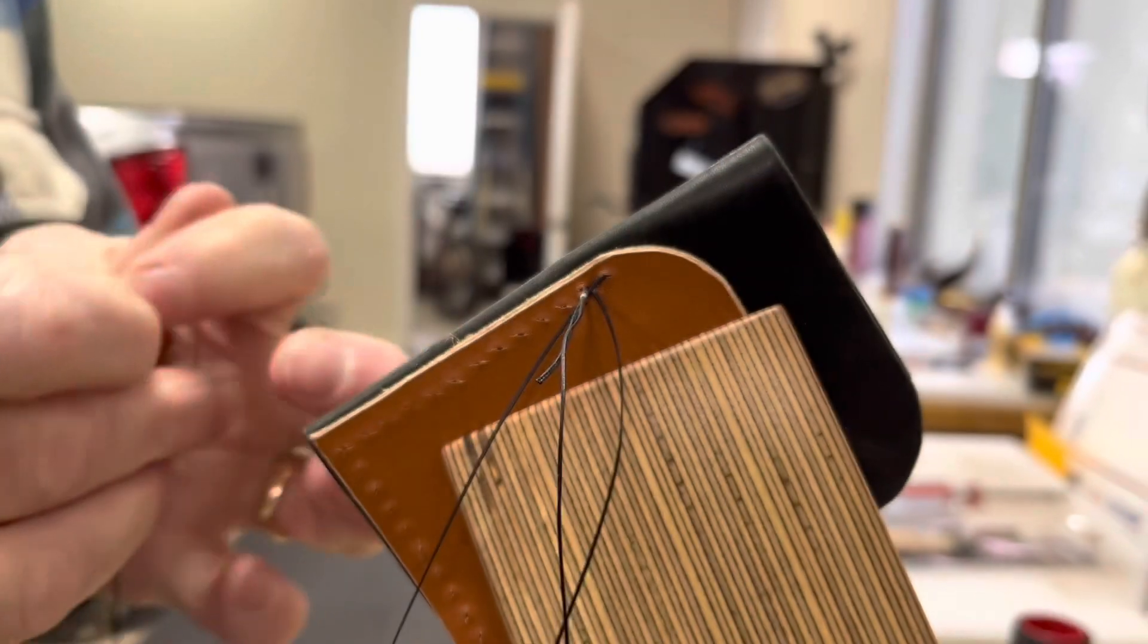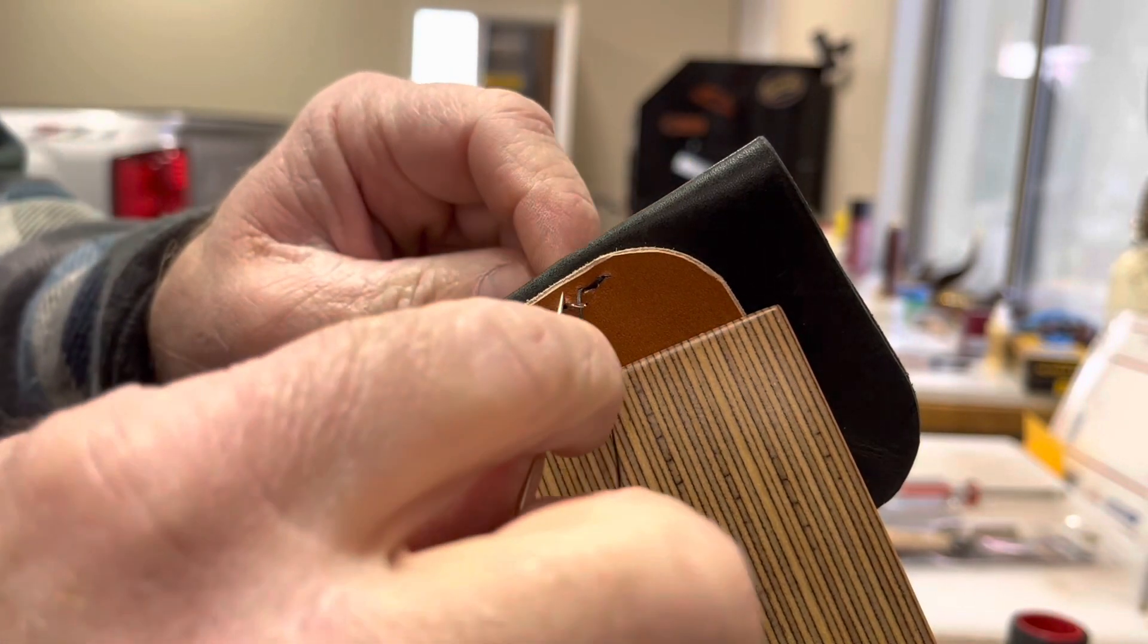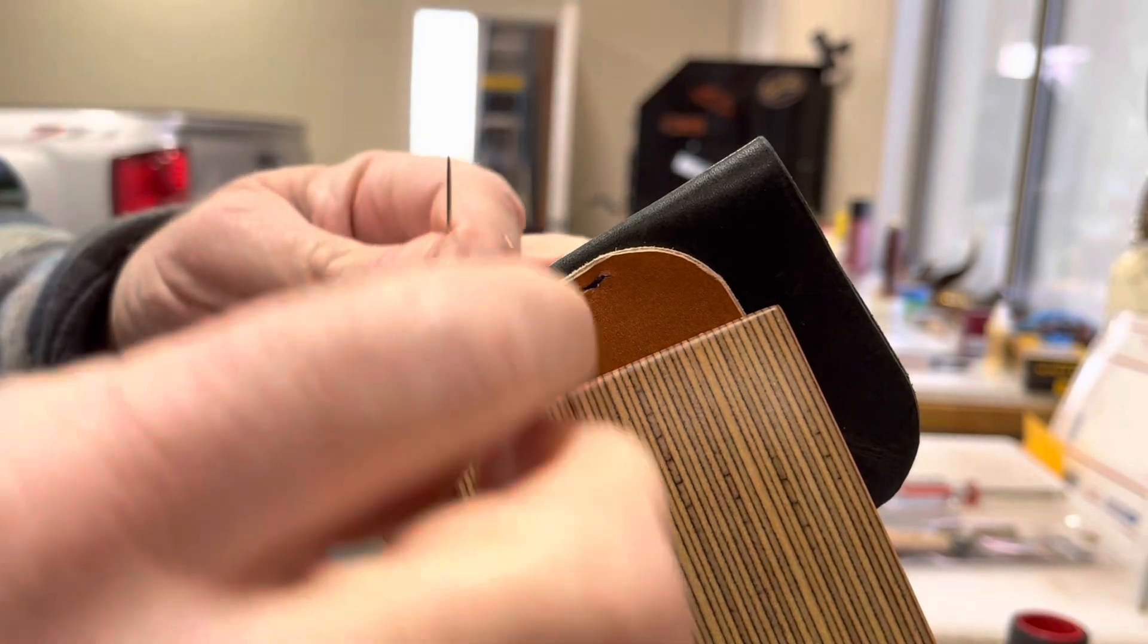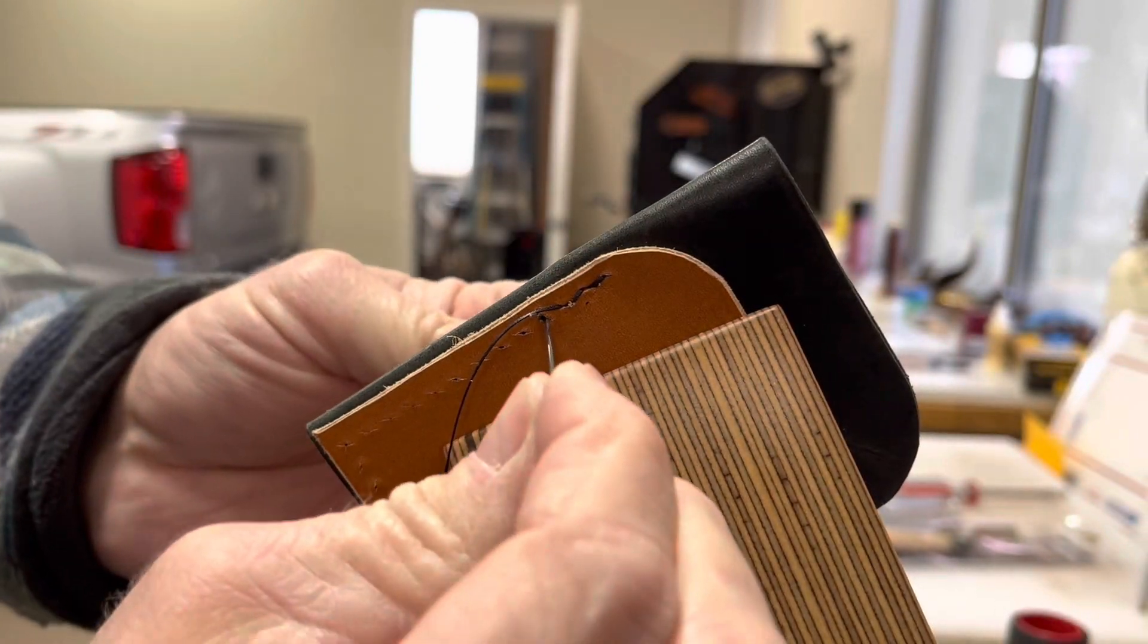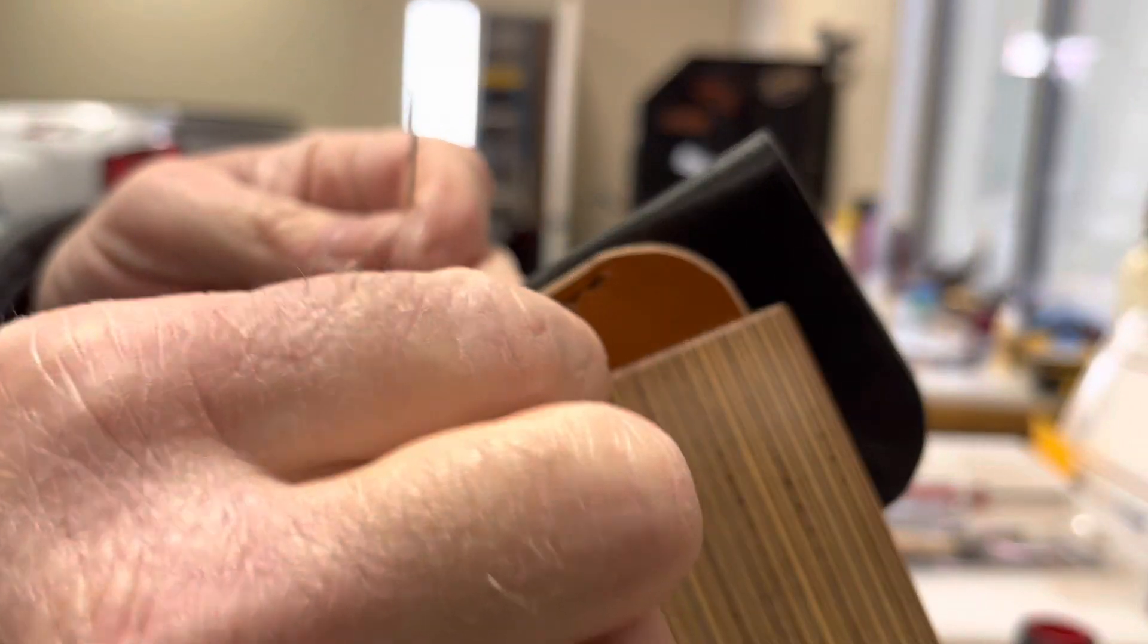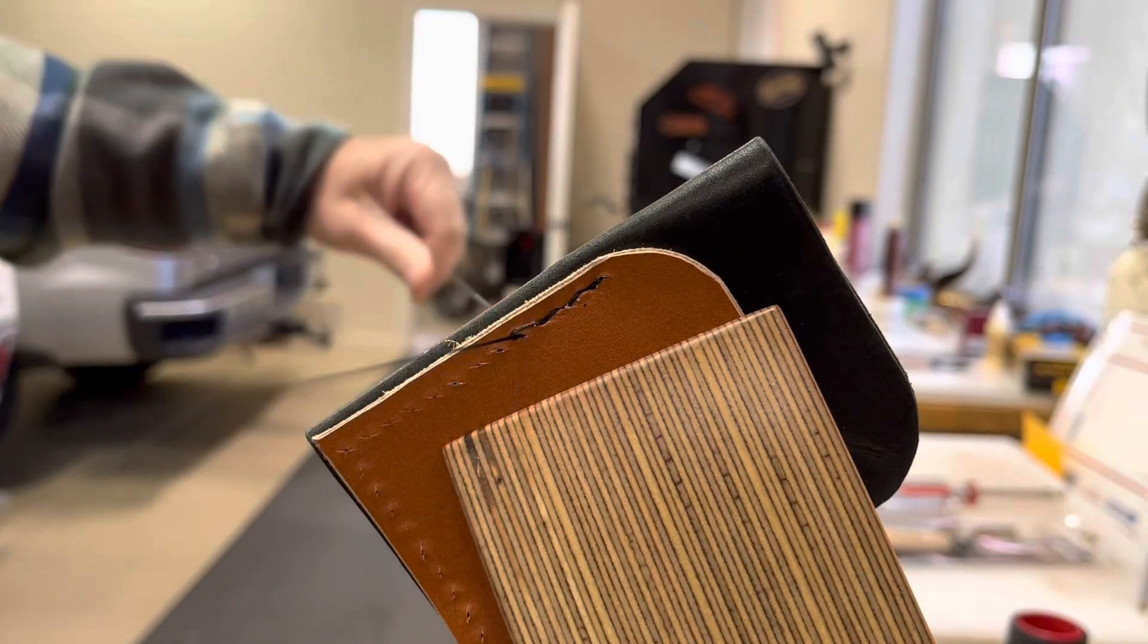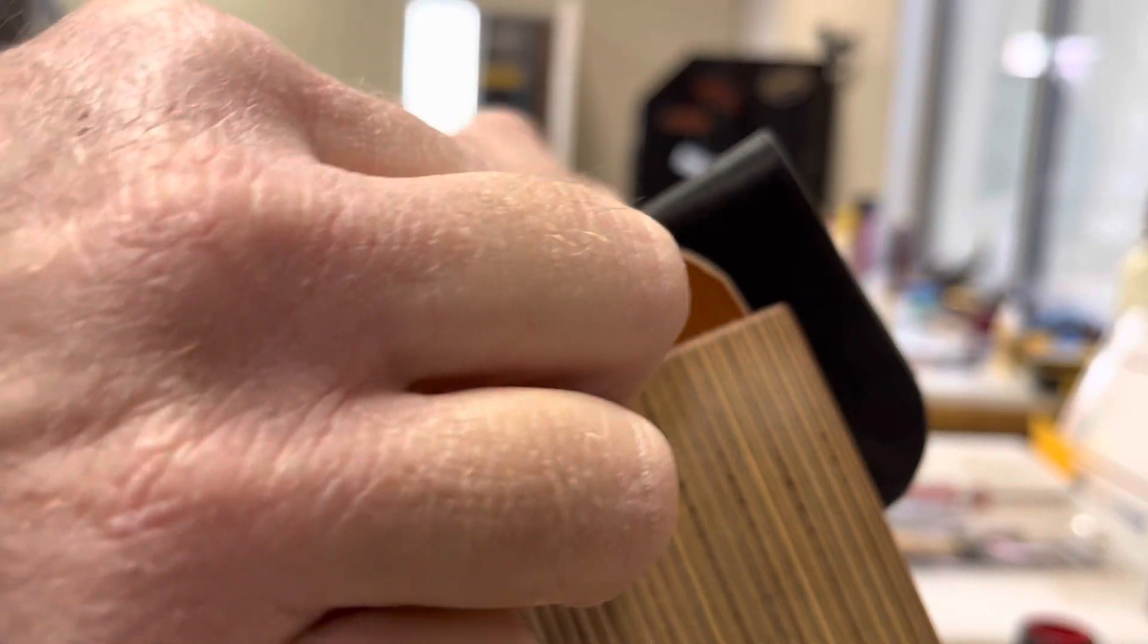I'm using the 0.06 thread. Once again, you can get that from a number of places, but I bought this particular thread through Weaver Leather. And I think I've said it in previous videos, but I use the 0.06 thread - it's the finest Tiger Ritza thread. I use that because the stitches are really pretty well defined, and I like how that looks on the finished project.